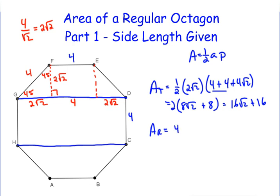So you just do 4 times 4 plus 4 root 2, which equals 16 plus 16 root 2.